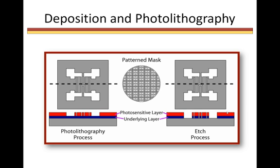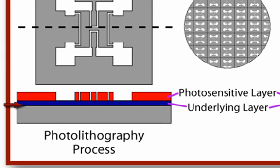In previous presentations, we discussed the deposition and photolithography processes. Both usually precede an etch process. In deposition, a thin film layer is deposited on the wafer surface, and the purpose can be structural, sacrificial, as an insulator, a conductor, a protective layer, or in photolithography, a photosensitive layer.